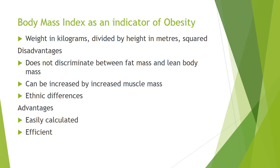A body mass index (BMI) is an indicator of obesity. BMI is calculated by the weight in kilograms divided by the height of the person in meters squared. Disadvantages of BMI: it does not discriminate between fat mass and lean body mass. It can be increased by increased muscle mass — for example in athletes and wrestlers, and people who go to the gym regularly may have a higher BMI. There are also ethnic differences; Asians should have a much lower BMI to stay healthy compared to their Caucasian counterparts.